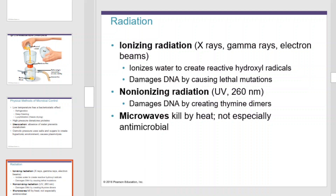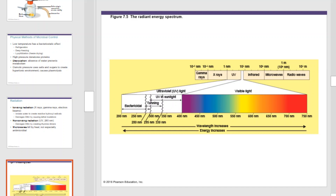Radiation is also an effective microbial growth inhibitor. Ionizing radiation, such as X-rays, gamma rays, and electron beams, ionizes water to create reactive hydroxyl radicals, which damages DNA and causes lethal mutations. Non-ionizing radiation, such as UV at 260 nanometer wavelengths, can damage DNA by creating thymine dimers. Microwaves kill by heat — they are not especially antimicrobial, as they simply boil water.